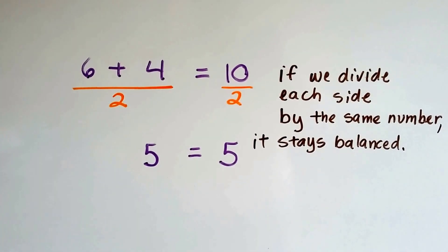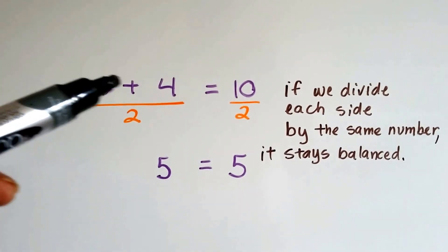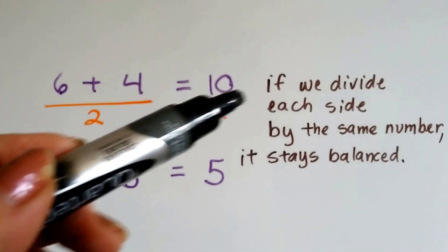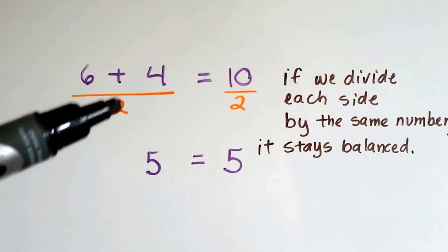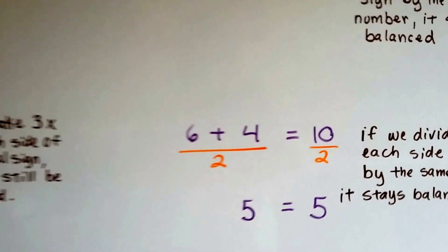And if we divide each side of the equal sign by the same number, it stays balanced. If we've got 6 plus 4 equals 10, we know they're balanced. We could divide both sides by the same number, by a 2. And this is 10 divided by 2 and that's 10 divided by 2. We're going to get 5. It stays balanced.